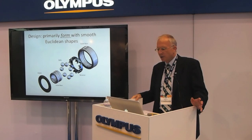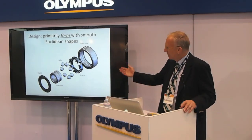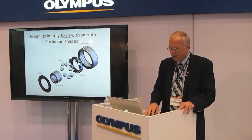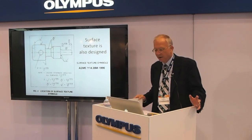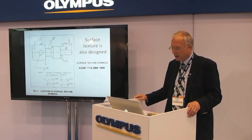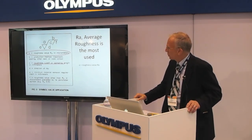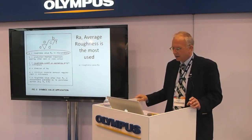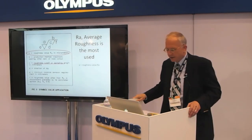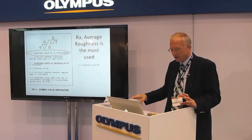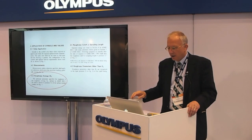Design is primarily done with form, usually with smooth Euclidean shapes — because if we magnify them enough, we find spheres, cylinders, or flat surfaces. But the surface texture or roughness also needs to be designed. ASME has designations for how design engineers are supposed to indicate roughness on surfaces. The most used kind of roughness — over 90% of industry — runs on RA, the average roughness. One important concept to keep in mind is the cutoff or sampling length, which specifies the scale at which roughness will be evaluated. That will be a theme in this talk and the next two.